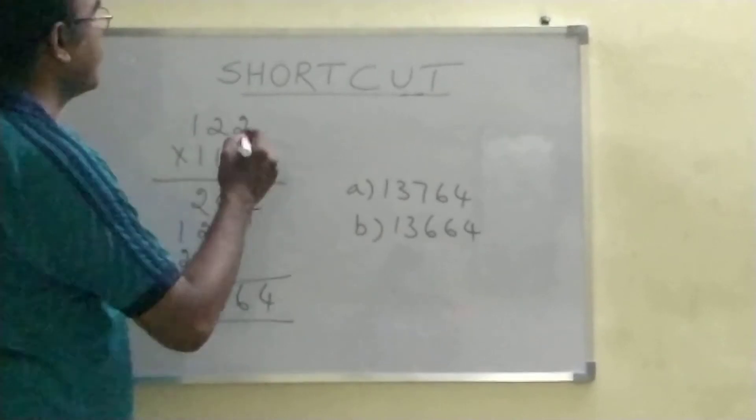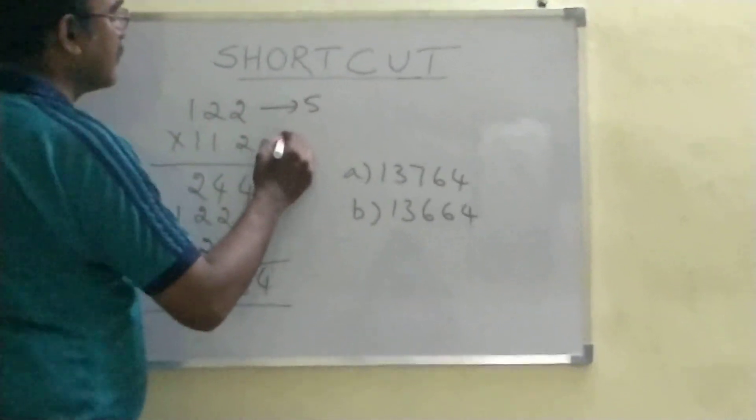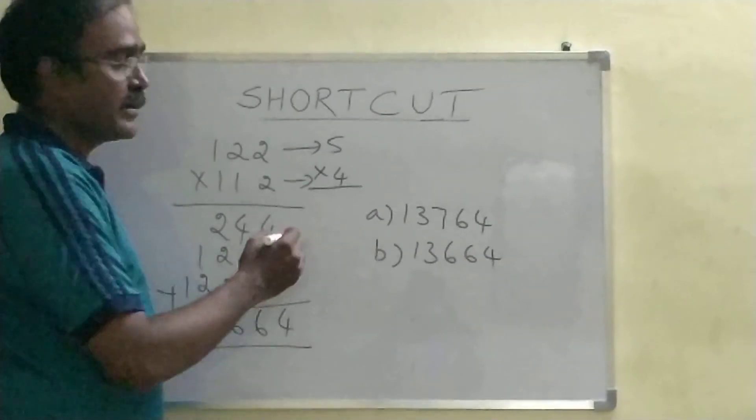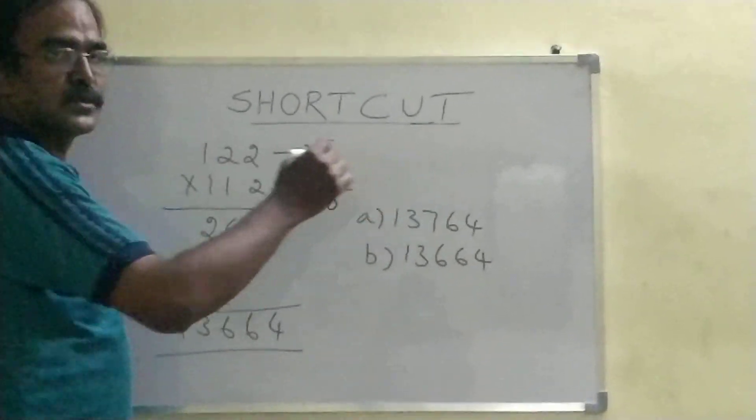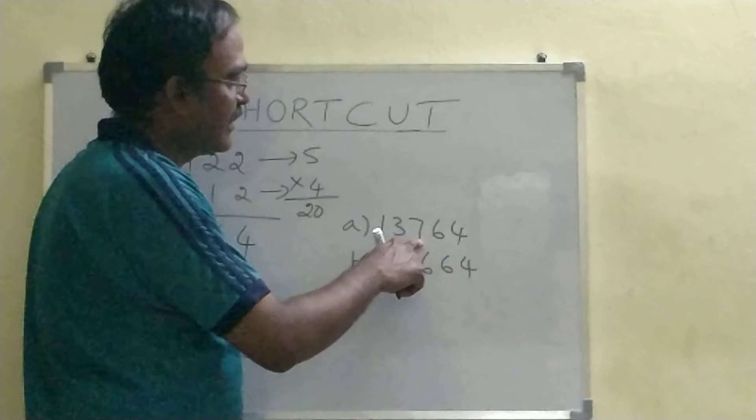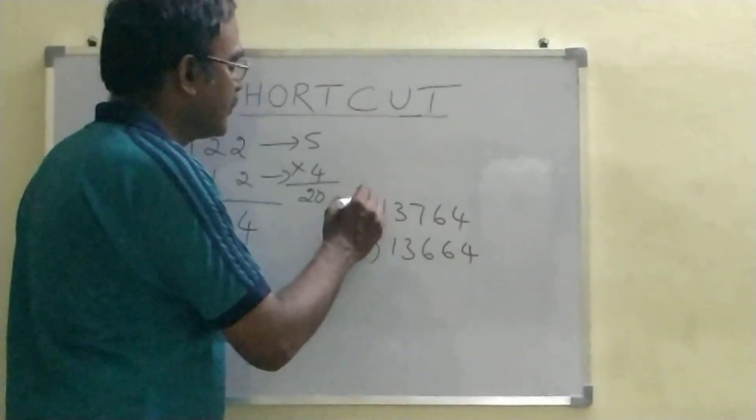How to do this in different method? 1 plus 2 plus 2 is 5. 1 plus 1 plus 2 is 4. So, the multiplication symbol should be carried out here. What is 5, 4, sum? Check out which option total is 20. Now, this is 1 plus 3, 4. 4 plus 7, 11. 11 plus 6, 17. 17 plus 4, 21. So, this is not the answer.